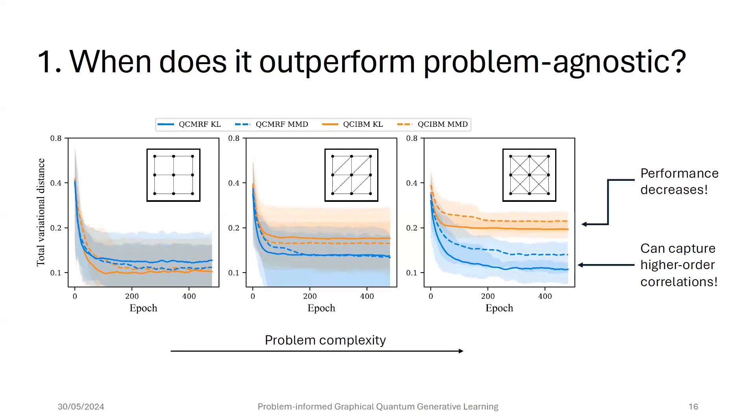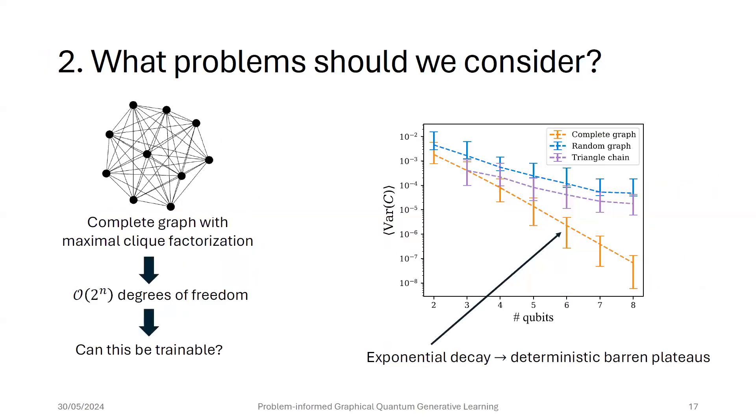But first of all, we can ask the question, when does it outperform problem agnostic models? And for this, we conducted some numerics by looking at these nine-node graphs with some grid-like topology. And what we saw is that as we increase the complexity of the problem by having bigger cliques, the performance of the problem agnostic model is worse and worse. But our model, which is the blue line, is actually the same because it also increases its complexity as the problem complexity increases. And also, what I should say, that even if we don't have a performance enhancement compared to problem agnostic ones, we actually have much less parameters, which is also desirable when we want to use quantum circuits.